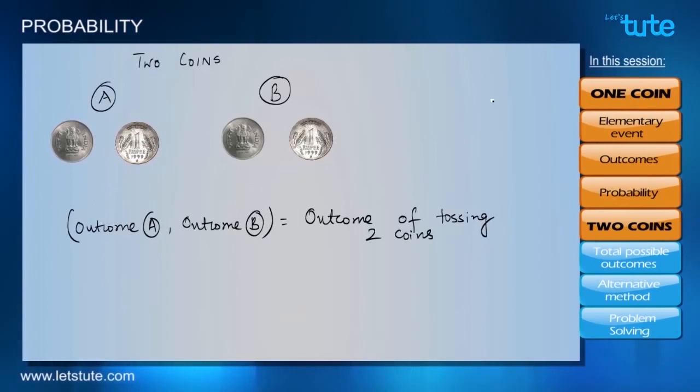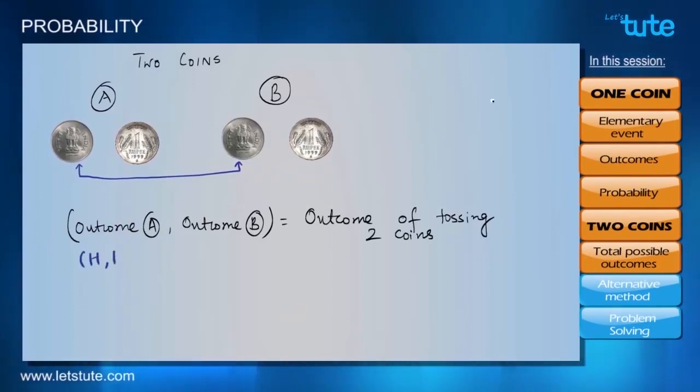And this particular set will be the outcome of tossing two coins. So, let's say upon first time tossing, we get heads on both the coins that is H and H. So, we'll write H, H. Similarly, we can write all the possible outcomes.